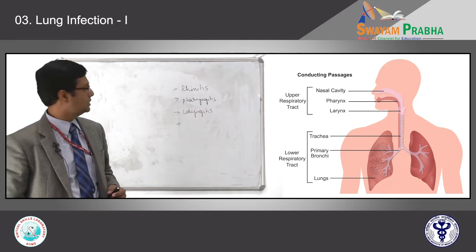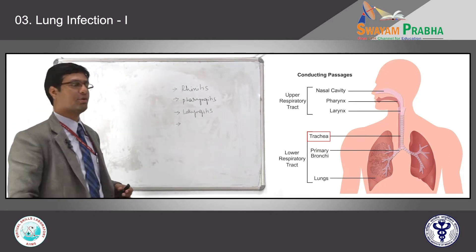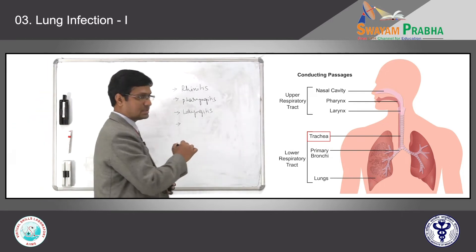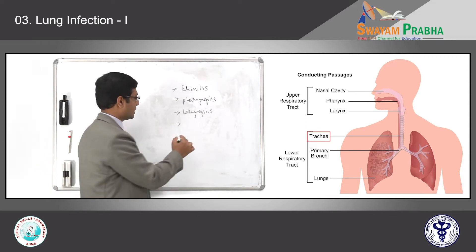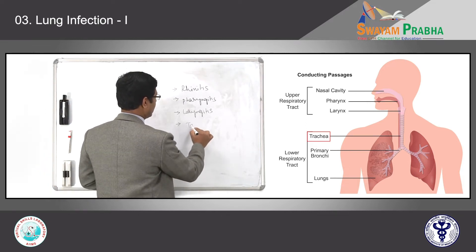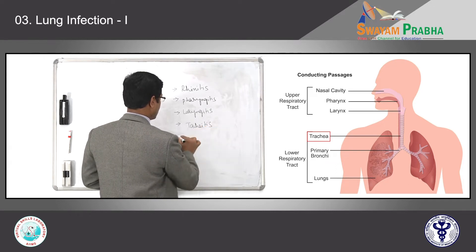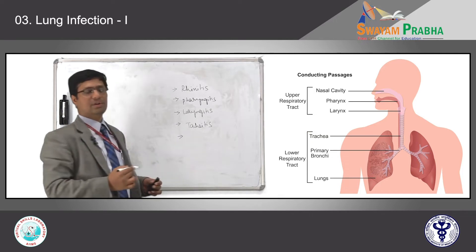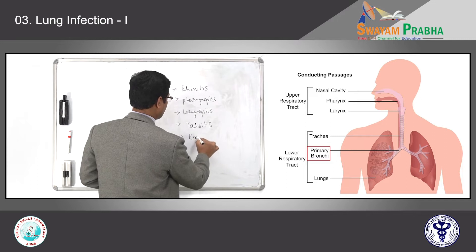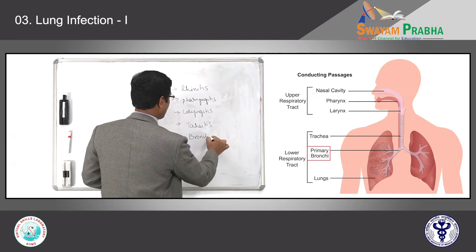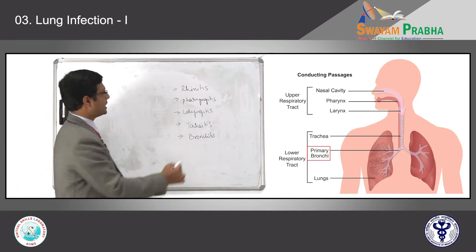Below the larynx, we have the trachea and its branches — that is the tracheobronchial tree. When there is infection limited to the trachea, we call it tracheitis. And infection limited to the major bronchus, we call it bronchitis.